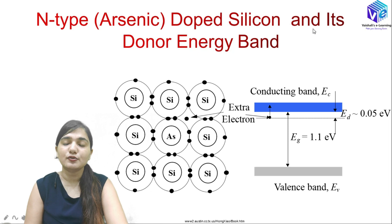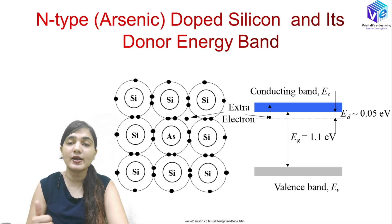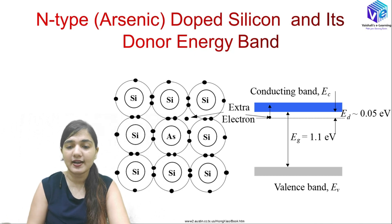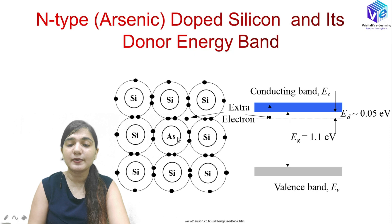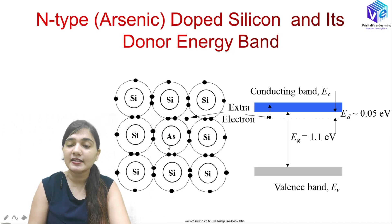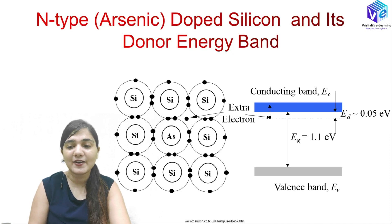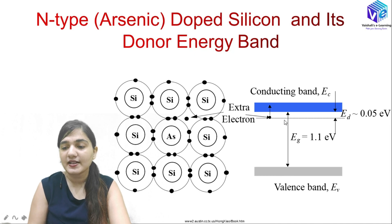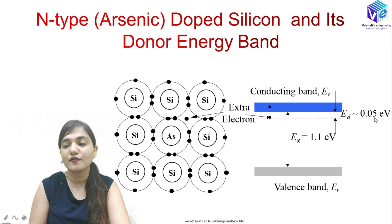For N-type doped silicon, impurities like arsenic take substitutional sites previously occupied by silicon atoms. Since arsenic has one extra electron compared to silicon, this extra electron moves into the energy gap, providing extra conductivity. The effective energy gap is reduced from 1.1 eV down to just 0.05 eV, resulting in high conductivity.